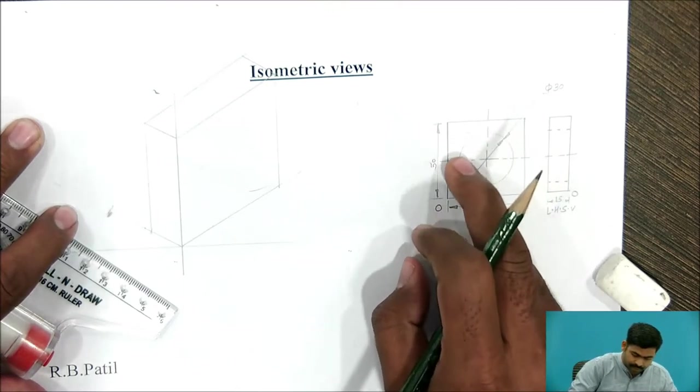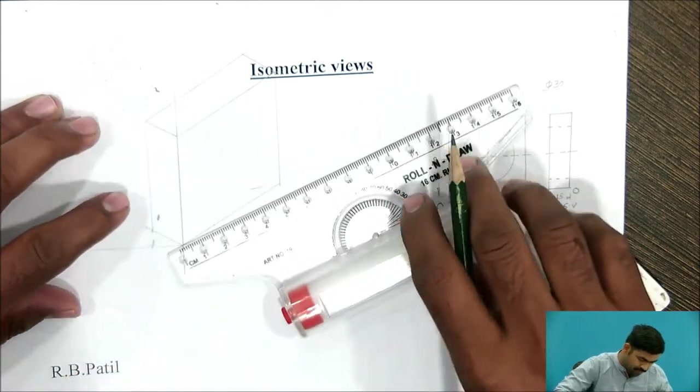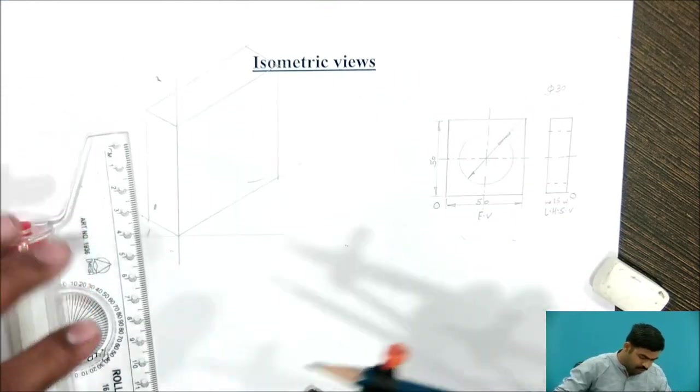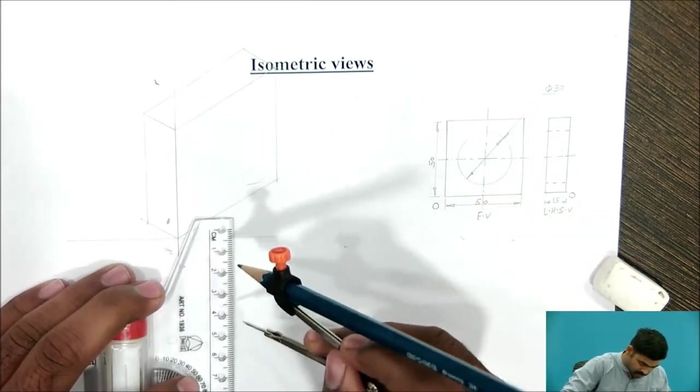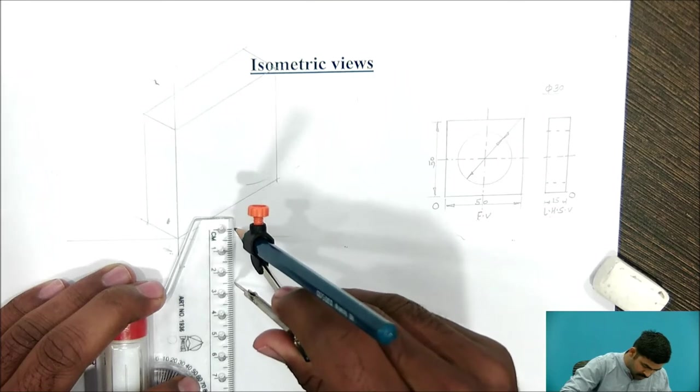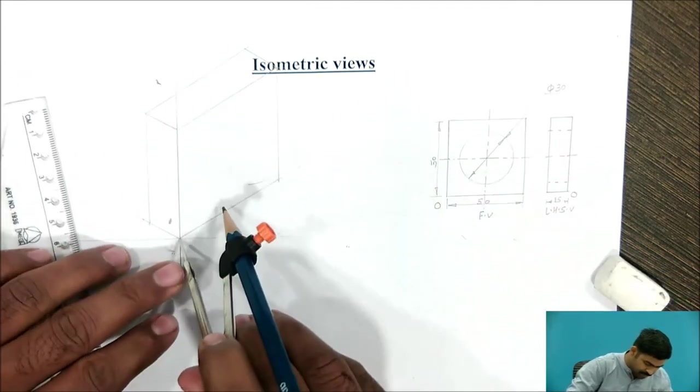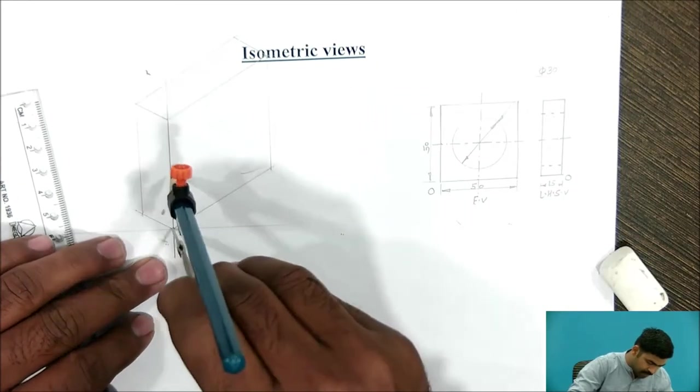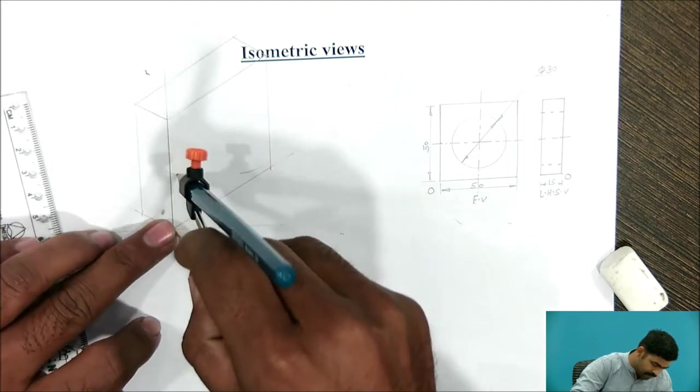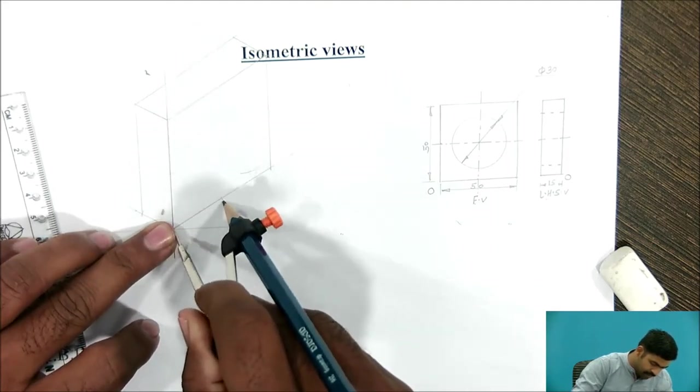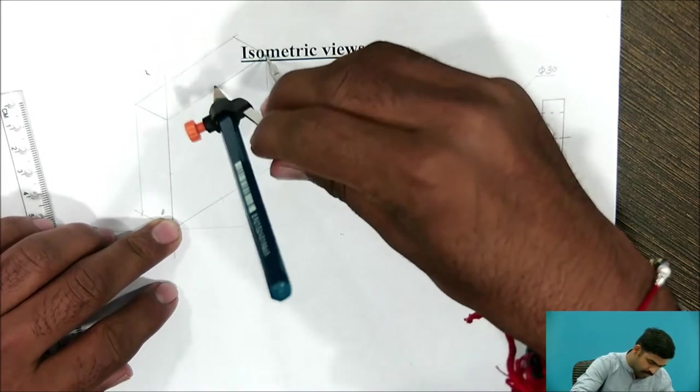Now, inner hole with diameter 30 is given. So, you have to draw. For the inner hole with the centre point, take 25 mm from this, again this point, this point, from this corner.